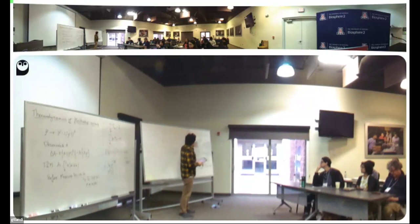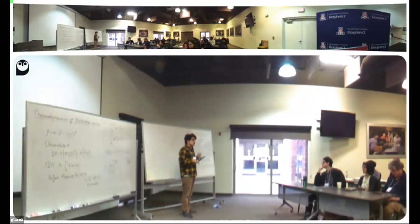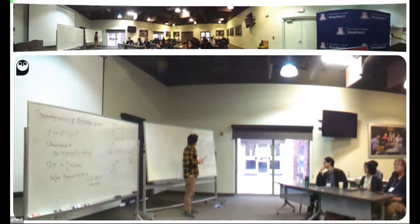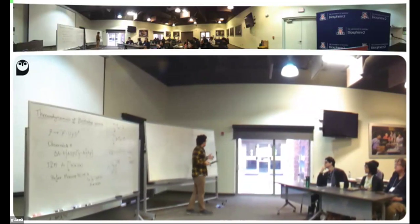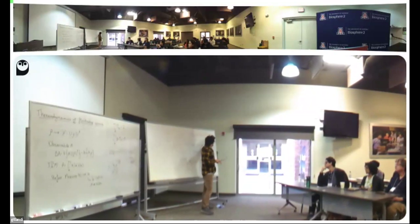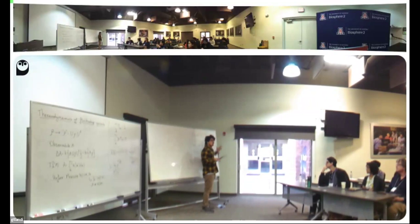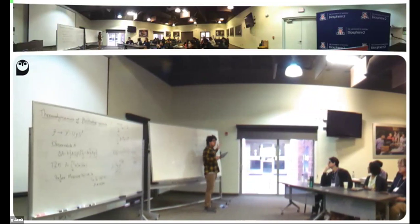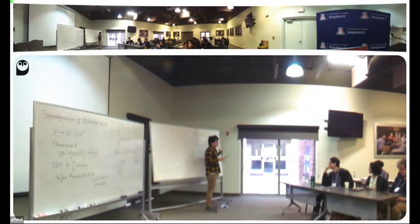Looking again at the two-point measurement probability distribution: the root of the problem is really that you end up with ρ̄ here. Even though you wanted to start with some ρ, you end up with ρ̄, because it's the dephased version from the first measurement.